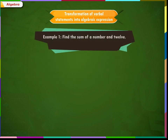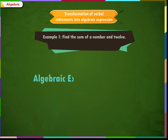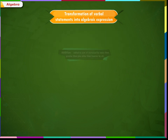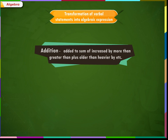The next topic is how verbal statements are transformed into algebraic expressions. Example 1: Find the sum of a number and 12. The word 'sum' means addition. The phrase 'a number' can be considered as X. So we can write the algebraic expression as X plus 12. Example 2: Find the difference of a number and 15. The word 'difference' means subtraction, and 'a number' is X. So the algebraic expression is X minus 15.